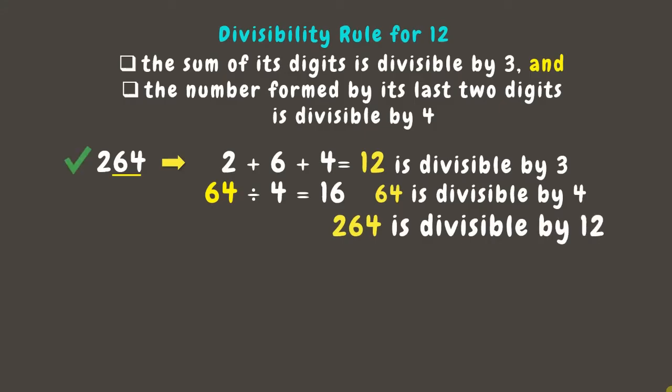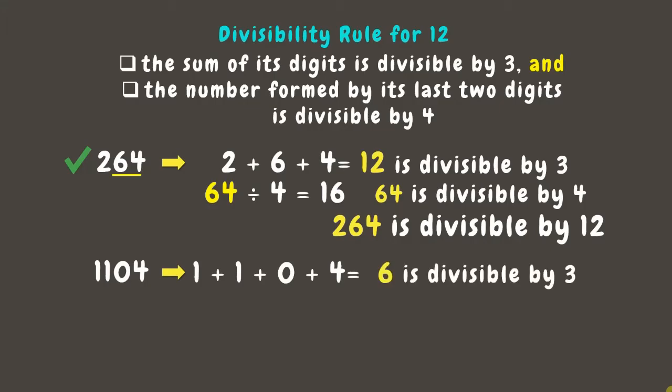Let's have 1104 as our next example. First, let's check if the sum of its digits is divisible by 3. Let's add: 1 plus 1 plus 0 plus 4 is 6, which is divisible by 3.